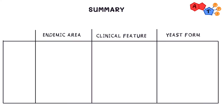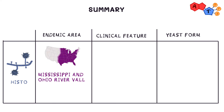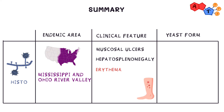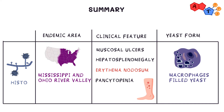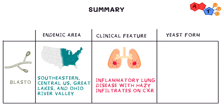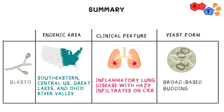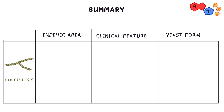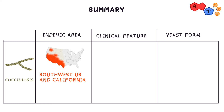In summary, for histoplasmosis: endemic in the Mississippi and Ohio River Valley, common in farmers and cave explorers, key distinguishing features are mucosal ulcers, hepatosplenomegaly, erythema nodosum, and pancytopenia, with yeast found inside macrophages. For blastomycosis: endemic in southeastern and central US, Great Lakes, and Ohio River Valley, featuring inflammatory lung disease with hazy infiltrates on chest X-ray, and broad-based budding yeast form.